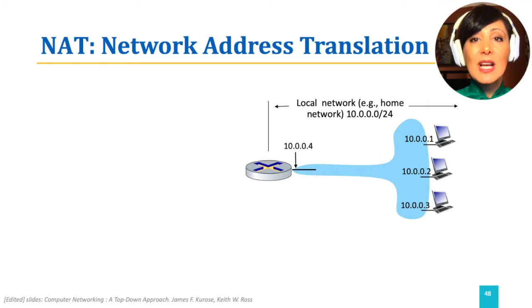Network Address Translation provides the opportunity of keeping a range of network addresses private while exposing them to the rest of the world using a single public IP address.